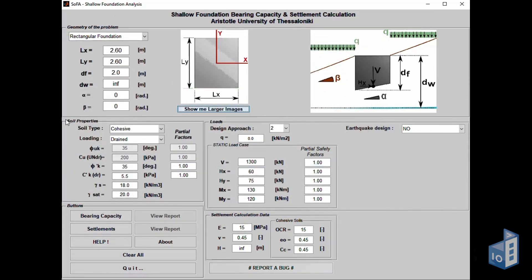Moving on to the soil properties, the soil type and loading have to be selected first. Choices include cohesive or cohesionless soil types and drained-undrained loading conditions. Depending on what was chosen, drained or undrained parameters are locked-unlocked.